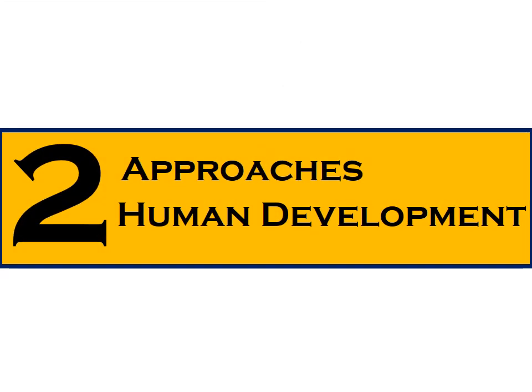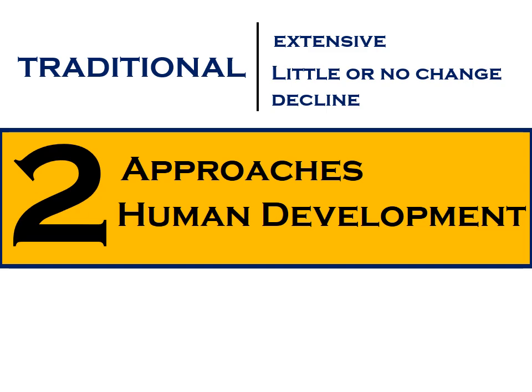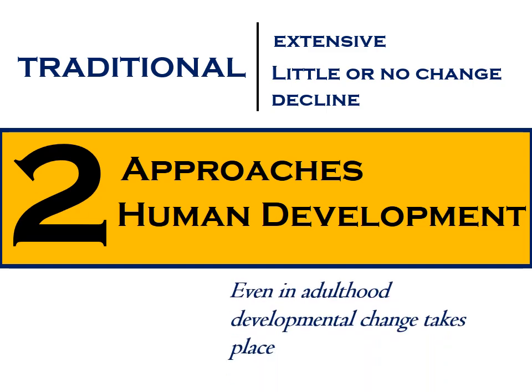Two Approaches of Human Development. If you believe that Naskiel and Ken will show extensive change from birth to adolescence, little or no change in adulthood, and decline in late old age, your approach is traditional. In contrast, if you believe that even in adulthood, developmental change takes place as it does during childhood, your approach is termed the lifespan approach.